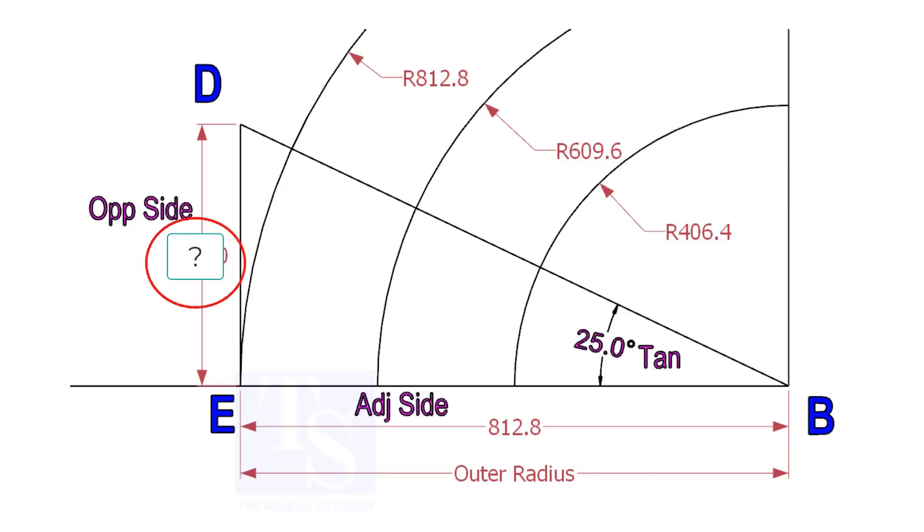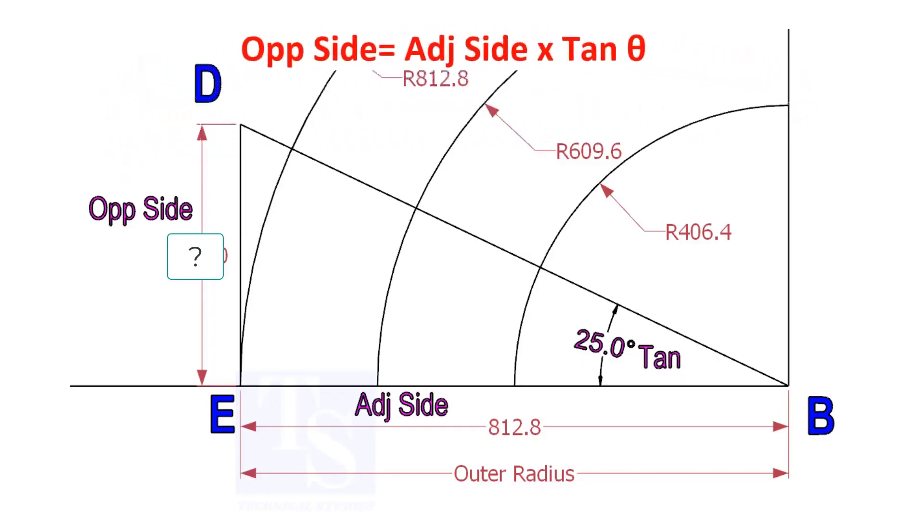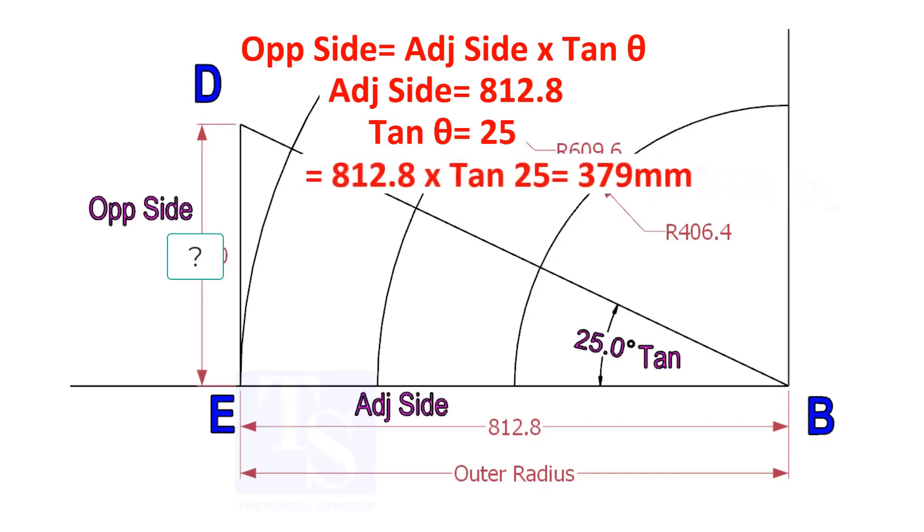To calculate ED, we need to apply the formula: tan theta equals opposite side divided by adjacent side. Opposite side equals adjacent side multiplied by tan theta. 812.8 into tan 25 equals 379 millimeters.